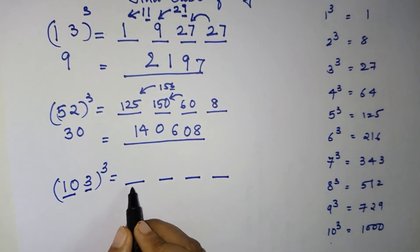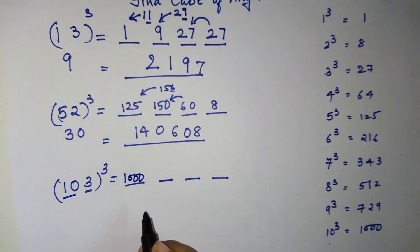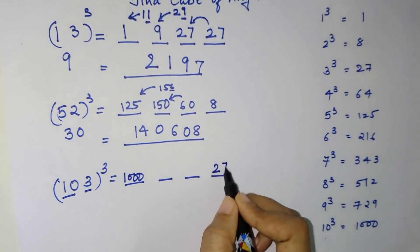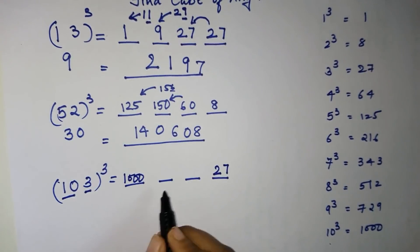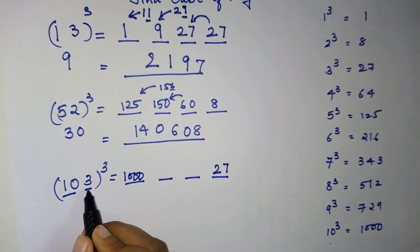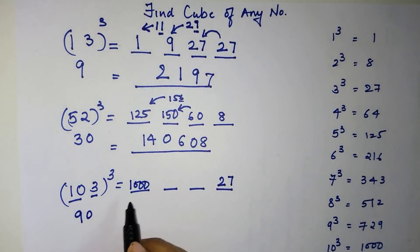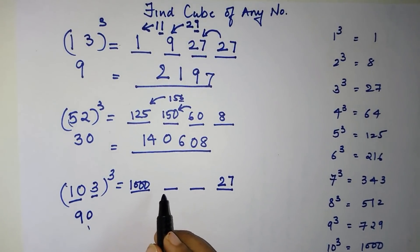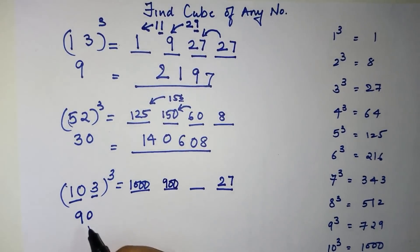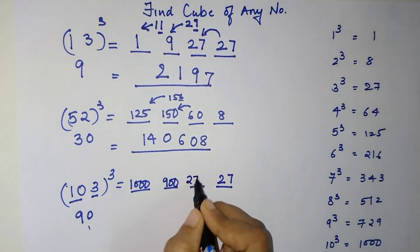The first part is the cube of 10, which is 1000. The last part is the cube of 3, which is 27. The common multiple is: 10 × 3 = 30, and 30 × 3 = 90. The second part is 90 × 10 = 900, and the third part is 90 × 3 = 270.